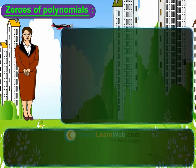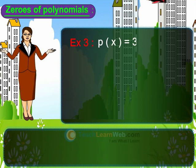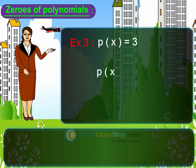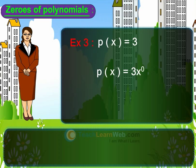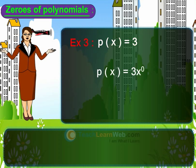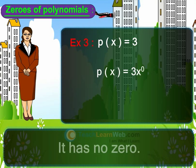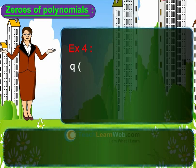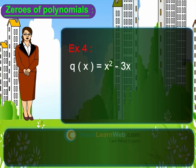Third example: p of x is equal to 3. This equation can also be written as p of x is equal to 3 into x to the power 0. So for any value of x, p of x is equal to 3. Hence it has no zero. Fourth example: q of x is equal to x squared minus 3x.